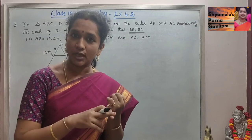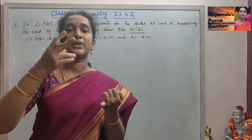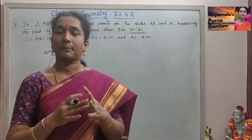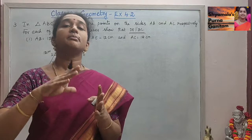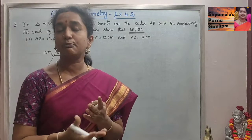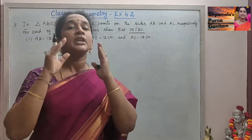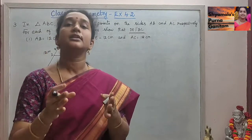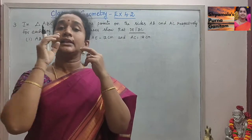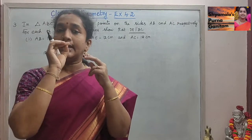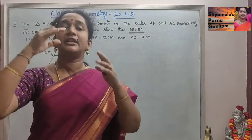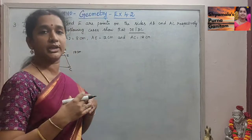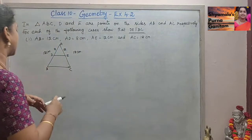The basic proportionality theorem states that if any two sides are parallel, then the sides are proportional. By the converse of the basic proportionality theorem, if the sides are proportional, then the line segment that divides the sides will be parallel to each other.